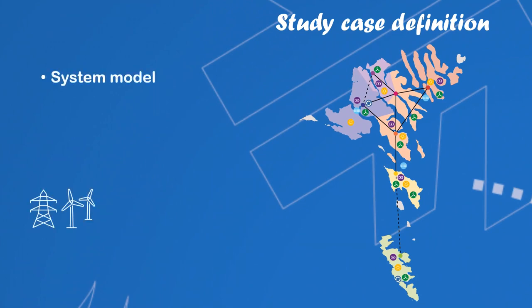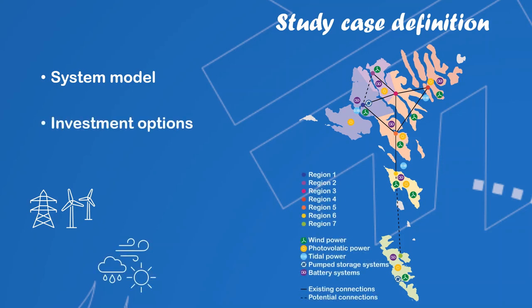The system model consists of the transmission system, generation and storage capacities, including information about emissions, costs, and current and future demand. The map shows every investment option considered. The maximum capacities, the local resource potential and costs for each site are required.